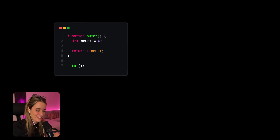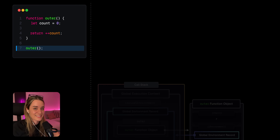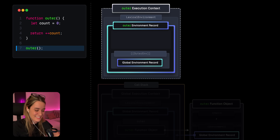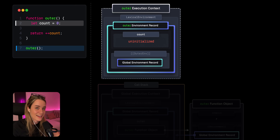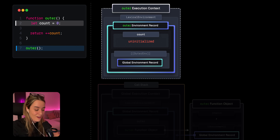The most important things to remember from that video is that a new function execution context gets created whenever we invoke a function, and also a new function environment record. Environment records are used to manage the identifier bindings within a certain context — so the variables, parameters, function declarations, and so on. During the creation phase of the execution context, memory space is allocated for all these values.